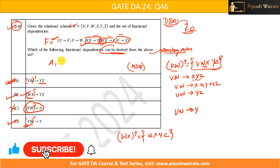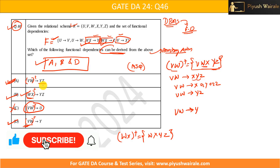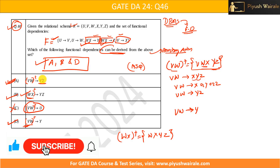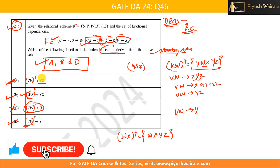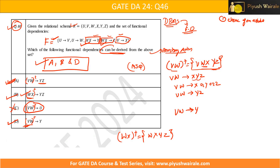In this question, options A, B, and D are the correct answers. This is a simple two-mark question — you just need to know how to find the closure of an attribute set and verify whether the right-hand side attributes appear in that closure. The closure of an attribute is a very important concept covered in the course. I hope you understood the concept — please like and subscribe for more GATE DA solutions.